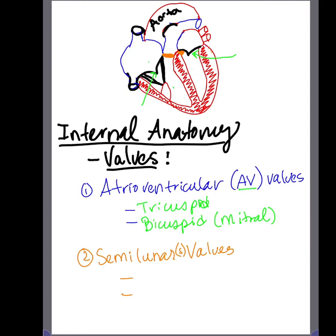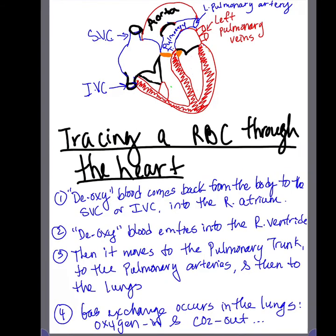We also have semilunar valves located between the ventricles and the large blood vessels. The pulmonary valve is between the right ventricle and the pulmonary trunk, and the aortic valve is between the left ventricle and the aorta.